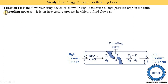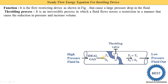What is the throttling process? Inside the throttling device, some process is done on the fluids. This process is called the throttling process. It is an irreversible process in which a fluid flows across a restriction in a manner that causes the reduction in pressure and increase in volume. With the reduction in pressure, the volume of the fluid is increased.